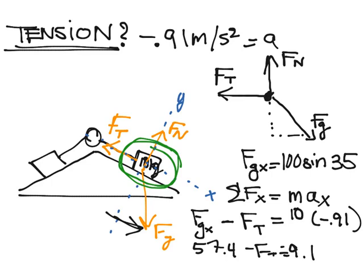We can solve for FT. FT is going to be equal to 57.4 plus 9.1, and we get force tension is equal to 66.46 newtons.